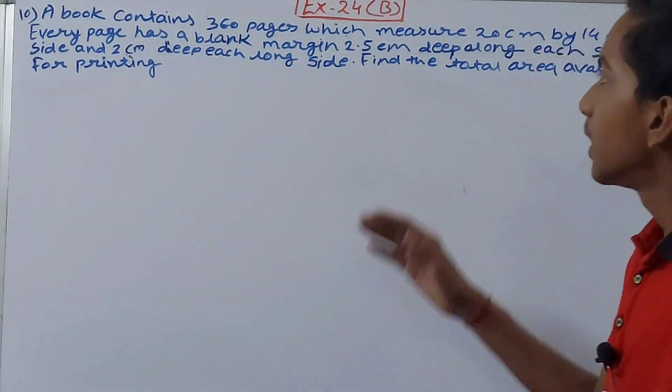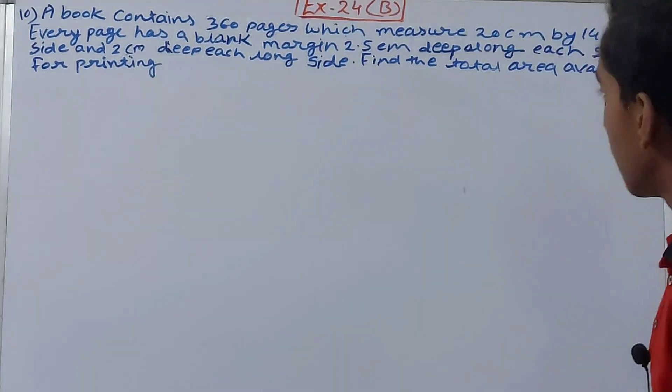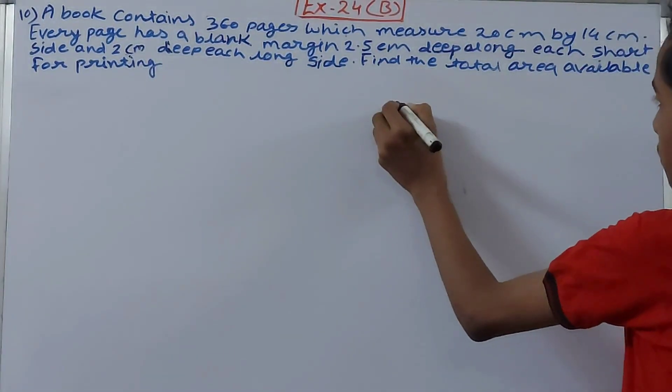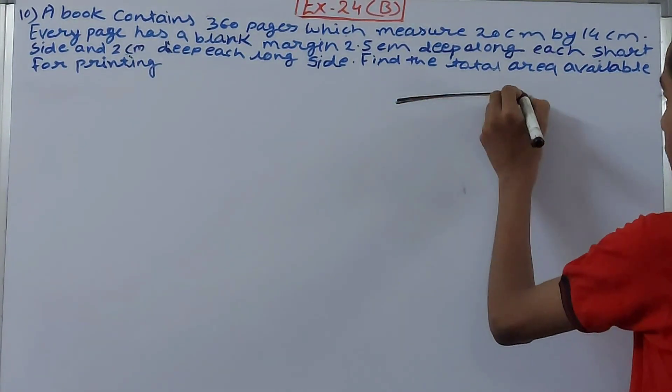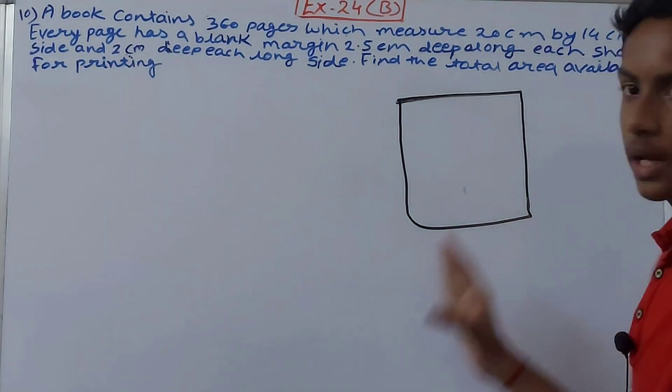See here, a book contains 360 pages, so there are 360 pages. But for your convenience I'll just draw here one page out of those 360. Now what you can see here, in this page there is some margin left.